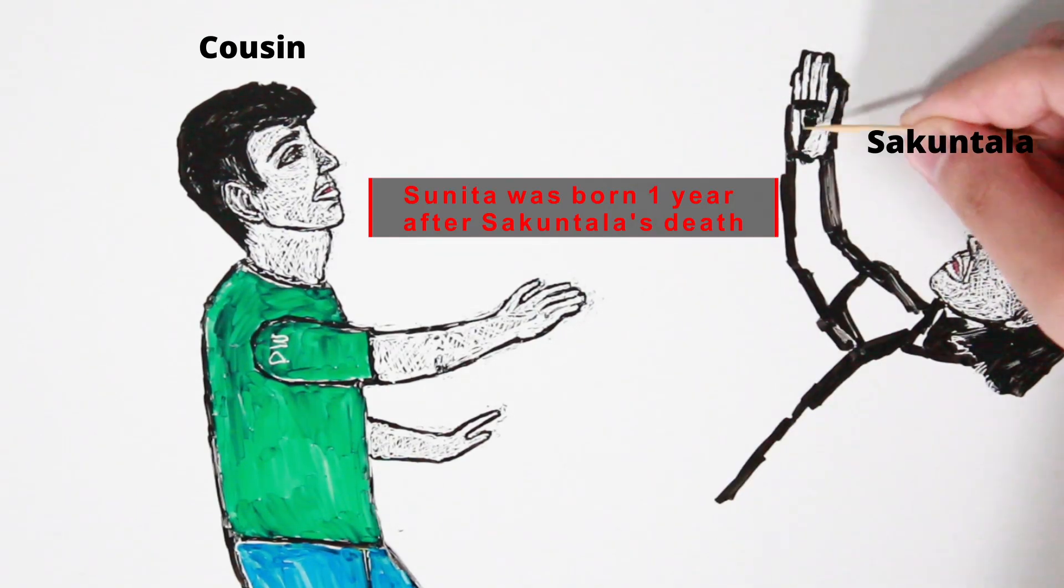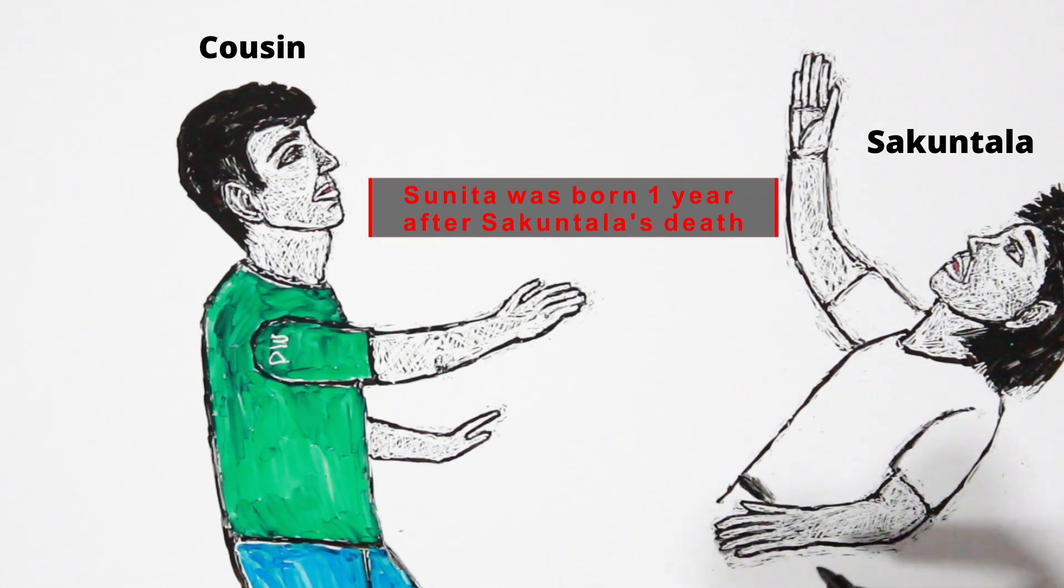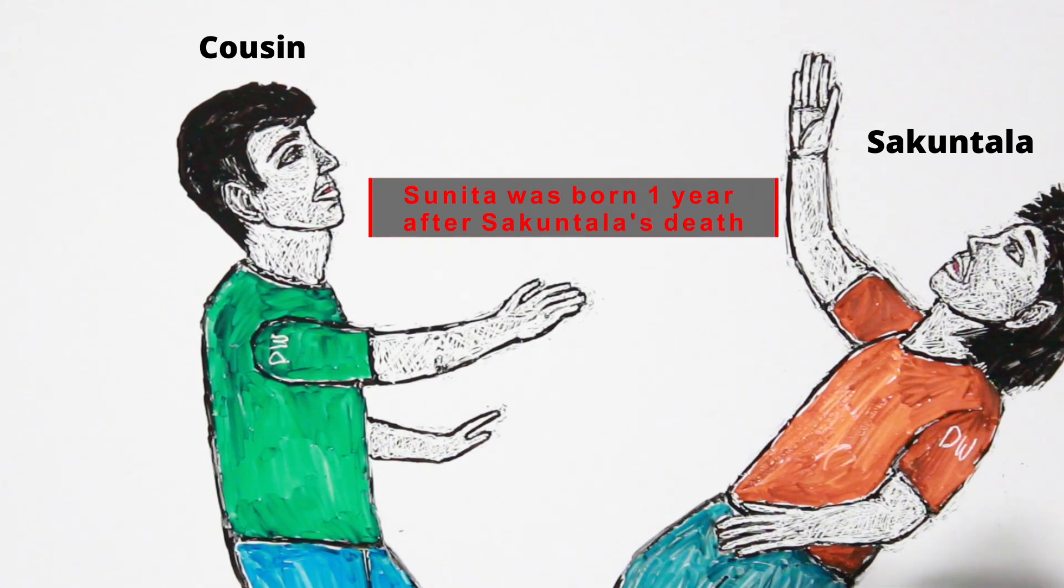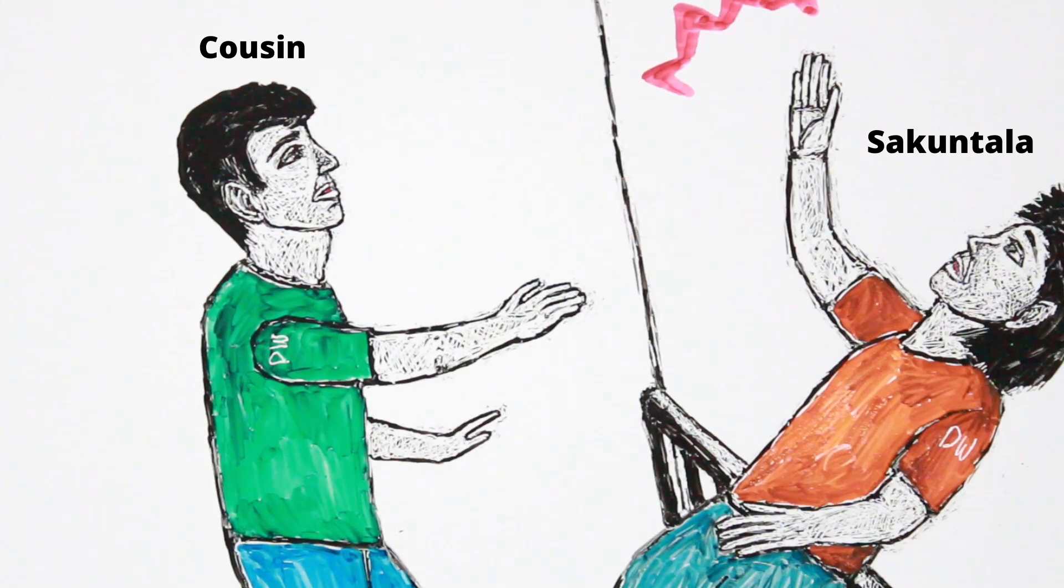Maheshwari's description of his daughter's death exactly matched Sunita's memories of her death in her previous life. As you know, Sunita said she was pushed off a building by her cousin and she fell on her head and died at the age of eight.